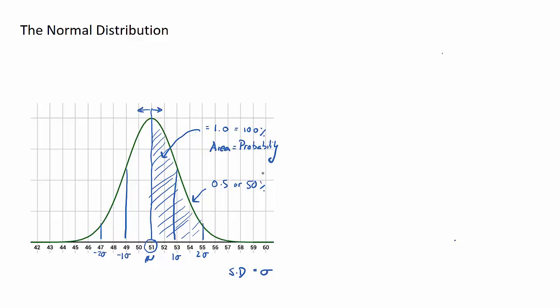So you'll see here that we sometimes interchange the words area, which is a shaded region, and probability, which is basically the same thing when it comes to normal distribution curves.